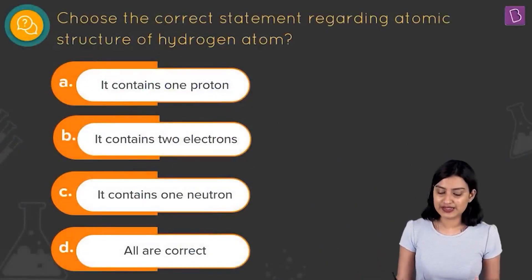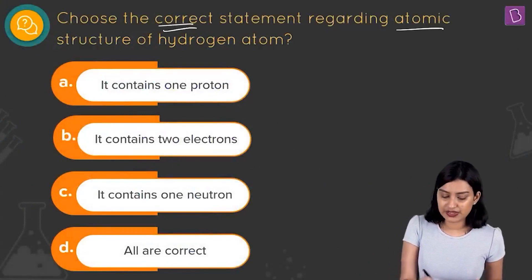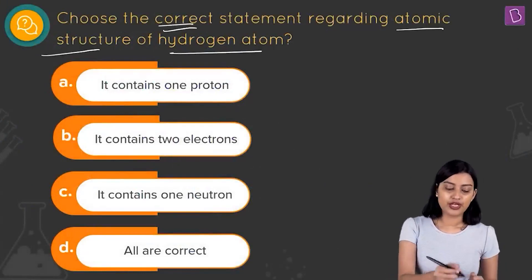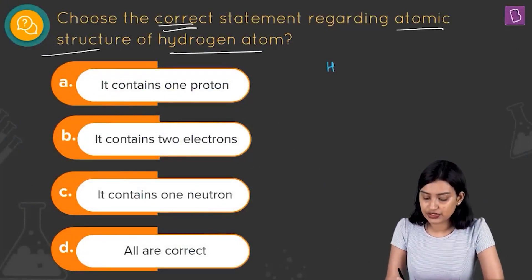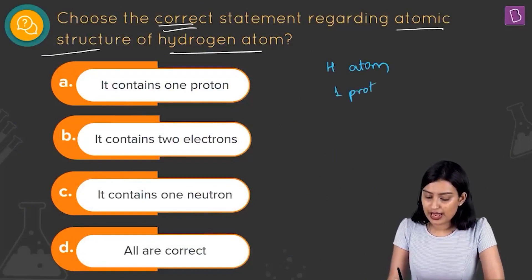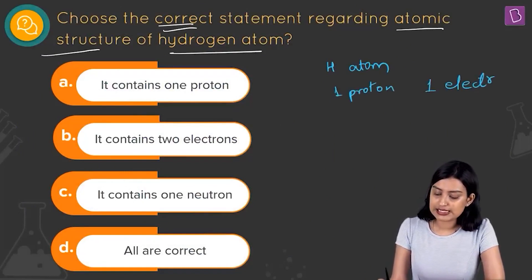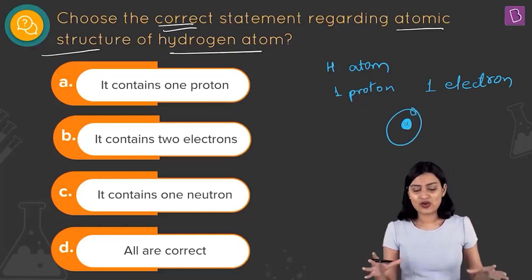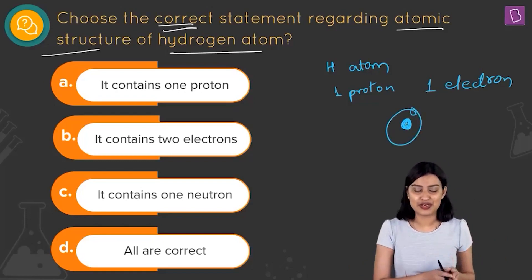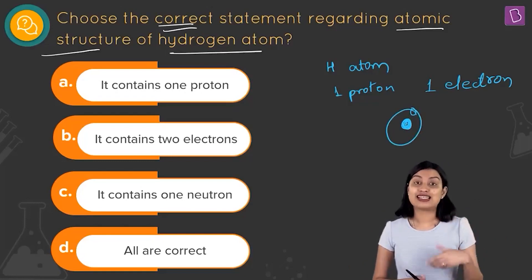They're asking us to choose the correct statement regarding the atomic structure of the hydrogen atom. We know that in the hydrogen atom we have one proton and one electron — this is the most simple atom we talk about. The proton is the nucleus and around that we have one electron. This is the entire concept of the atomic structure of hydrogen, and now we have to check for this in the options.